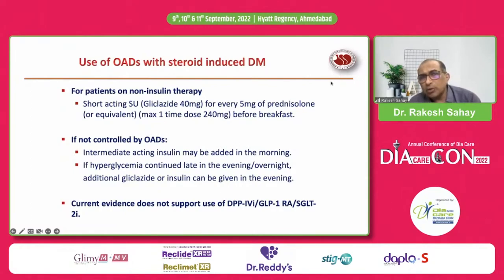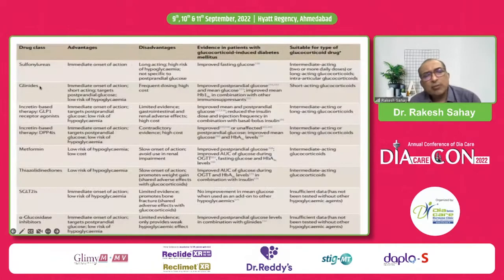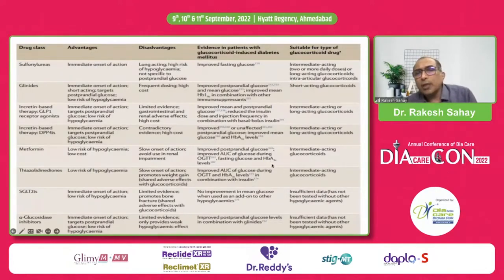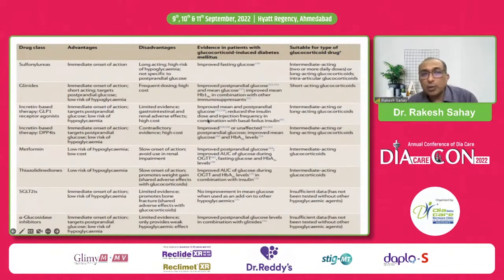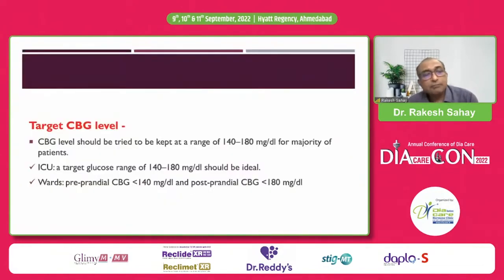Current evidence — particularly the RSSDI guideline from 2016–17 — did not speak about GLP-1 receptor agonists or SGLT-2 inhibitors at that time. However, more recent data from the COVID era, when steroid-induced hyperglycemia was widely managed, showed that SGLT-2 inhibitors like dapagliflozin were used in some stable patients — the DARE-19 study and others showed no significant problems. Metformin was also found to be a good agent in some patients, and DPP-4 inhibitors were found to be particularly effective in several studies.